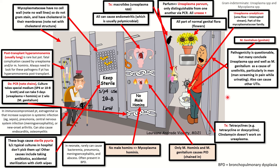To summarize: ureaplasma urelyticum and ureaplasma parvum are only distinguishable by PCR, and along with mycoplasma genitalium and hominis, often cause UTIs but are all part of the normal genital flora. All of them can cause endometritis, and hominis and genitalium can cause pelvic inflammatory disease. They will cause sterile pyuria because typical cultures won't pick them up — you have to specifically check via PCR. Treatment is tetracycline or doxycycline, and you can use a macrolide for ureaplasma species. Have a great day, folks.